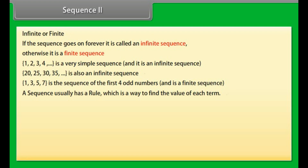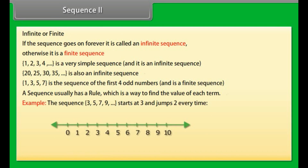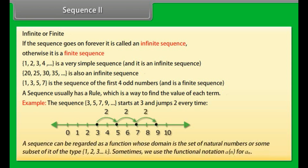A sequence usually has a rule which is a way to find the value of each term. For example, the sequence 3, 5, 7, 9, and so on starts at 3 and jumps by 2 every time. A sequence can be regarded as a function whose domain is the set of natural numbers or some subset of it of the type 1, 2, 3, up to k. Sometimes we use the functional notation a(n) for an.